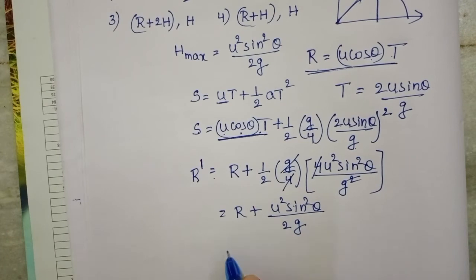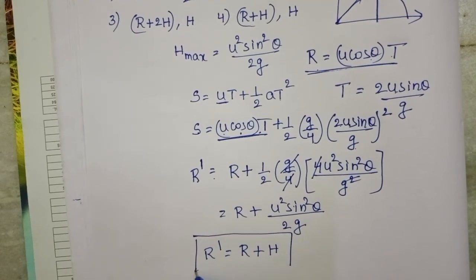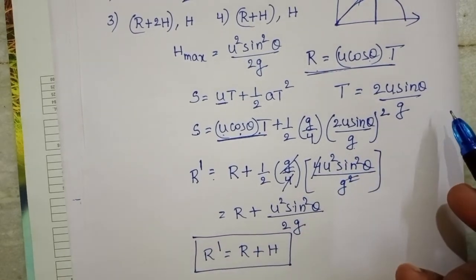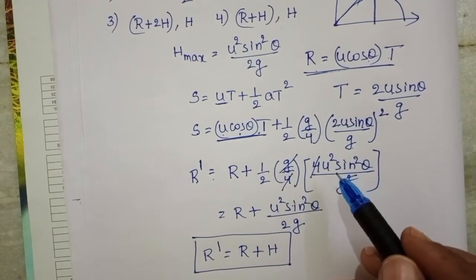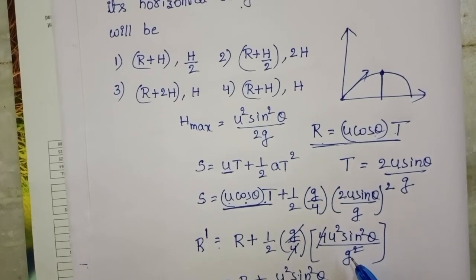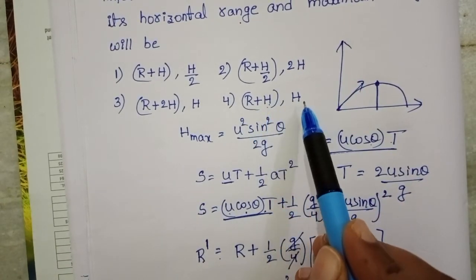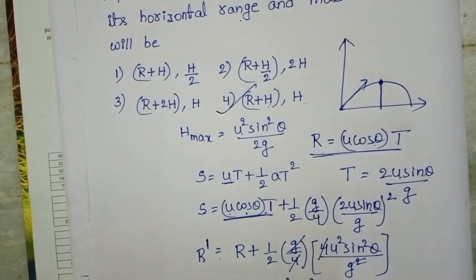Substituting, the final range becomes R + H. So maximum height is unaffected and remains H, but the range is affected by the horizontal acceleration and becomes R + H. Therefore, the correct option is: range = R + H and maximum height = H, which is the fourth option.